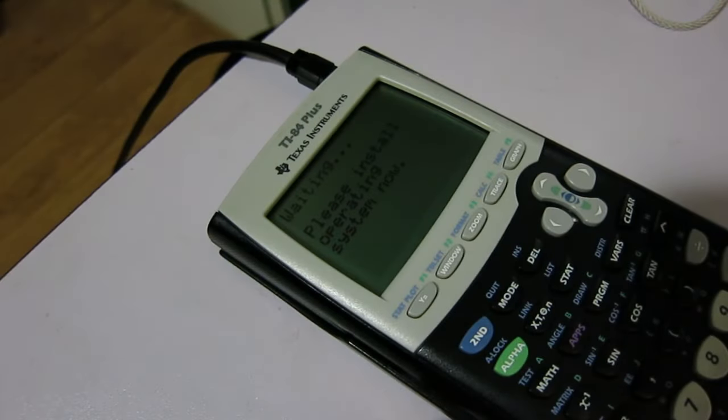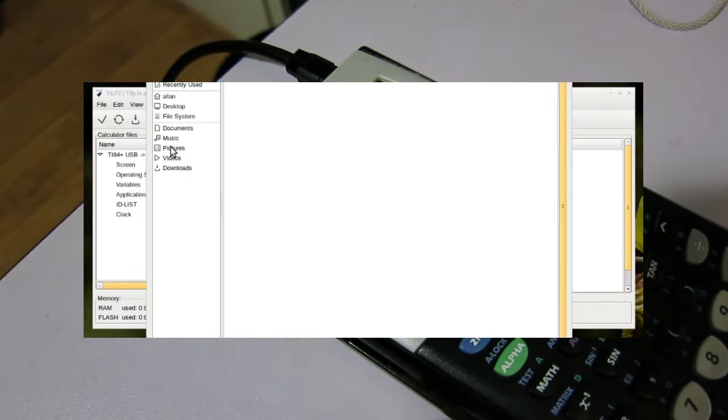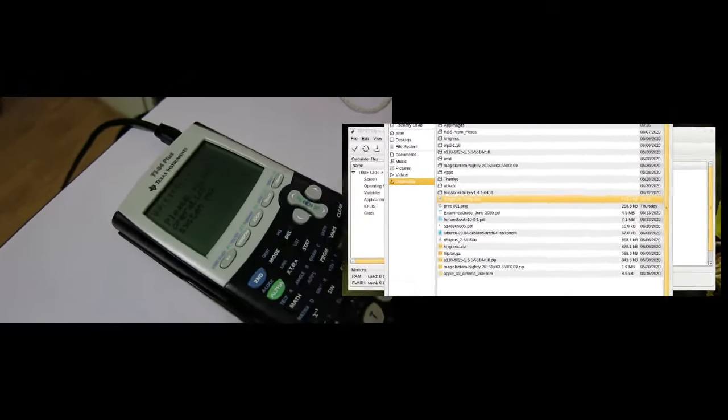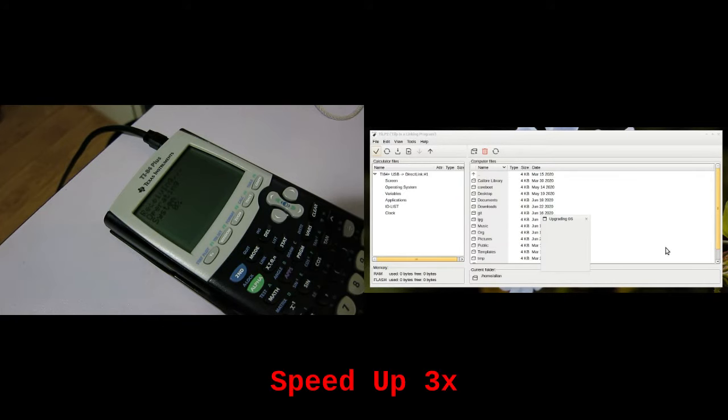Now, we can open TILP, which should recognize your calculator. Go to File, then Send Files, and select the file we downloaded earlier. Click Forward, and the flashing process should begin. If you get an error, just try it again until it works. The flashing process shouldn't take too long, just a few minutes.